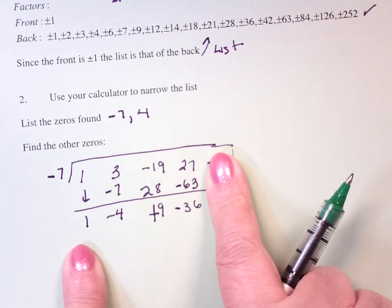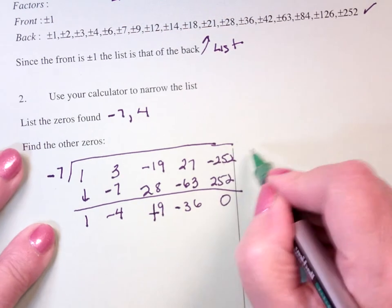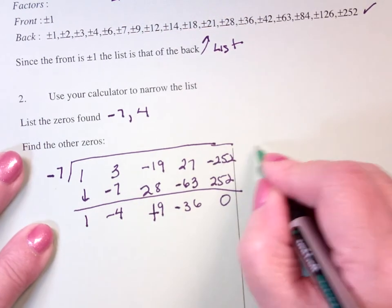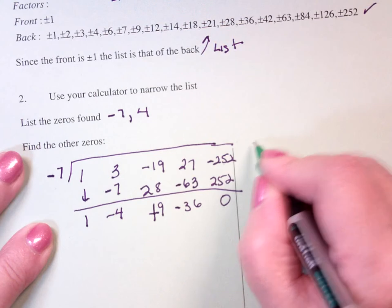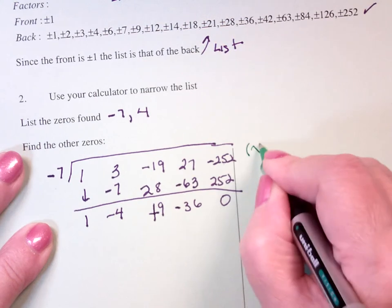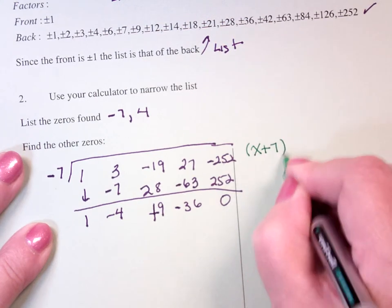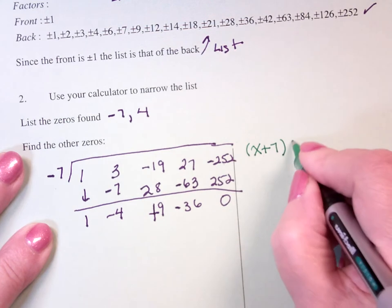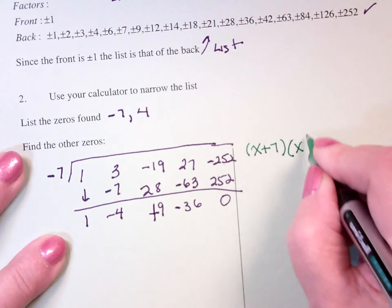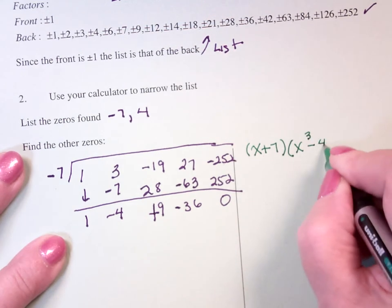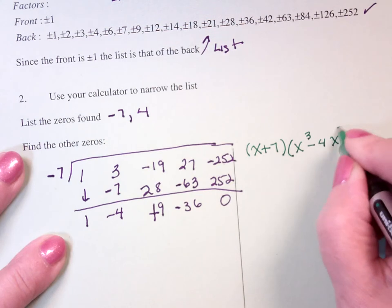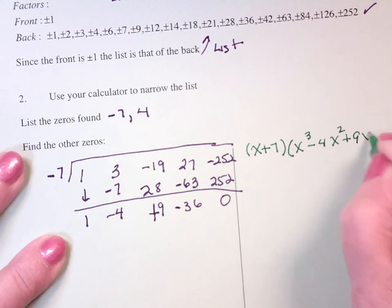So, what I've said is that, I know that F of X is now, X plus 7, because if I know the zeros, then I know the factors, times X cubed, minus 4X squared, plus 9X minus 36.